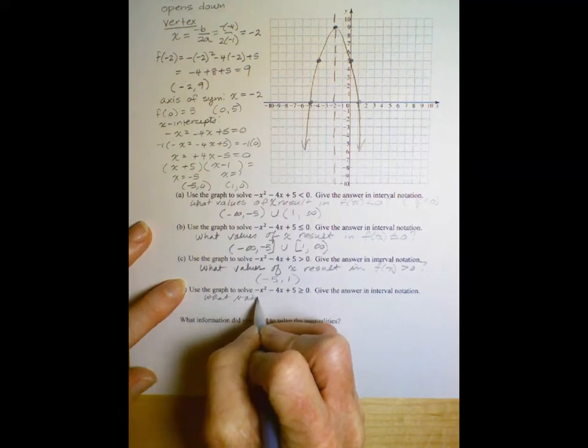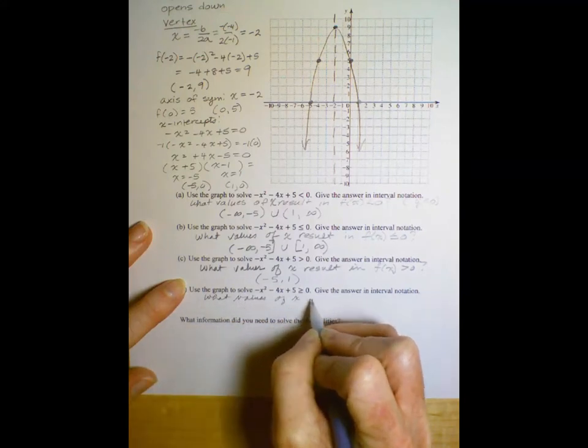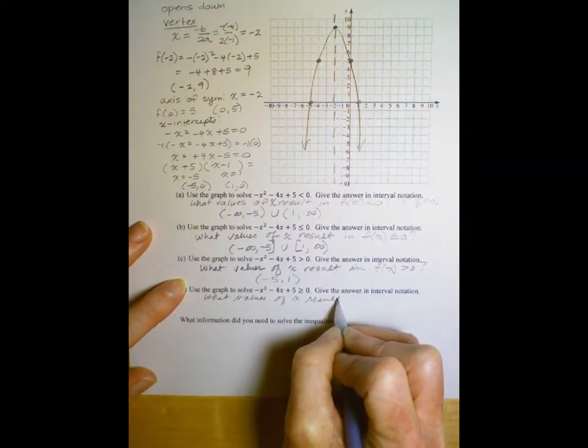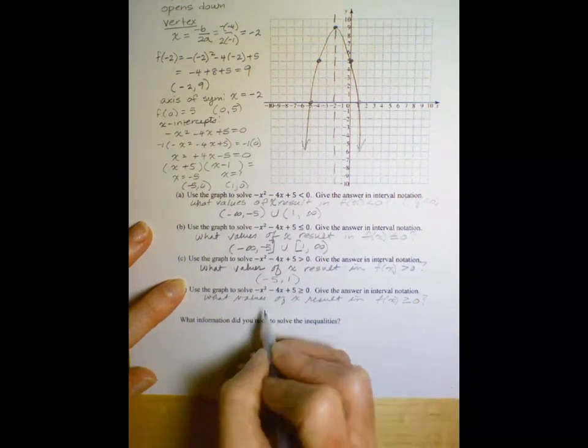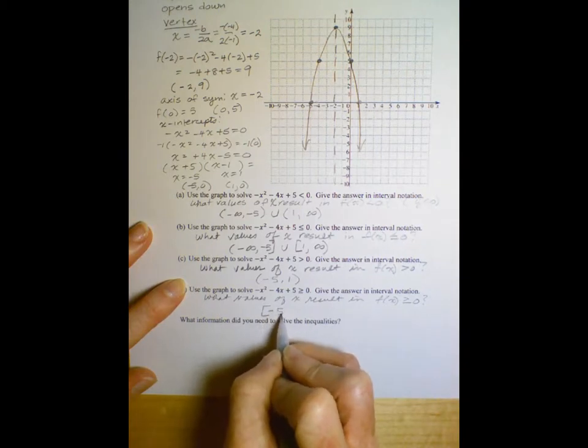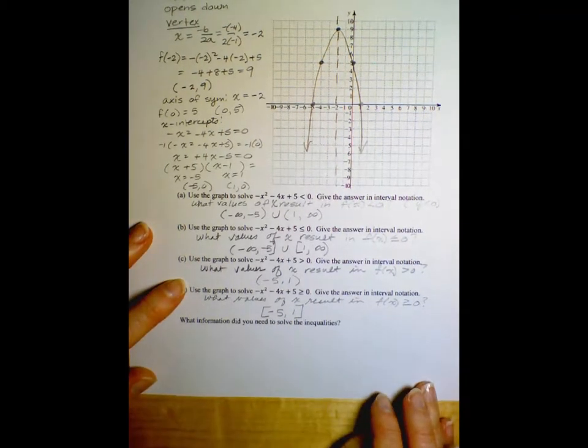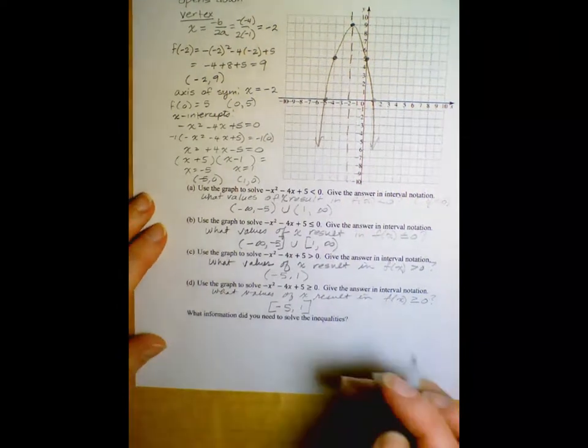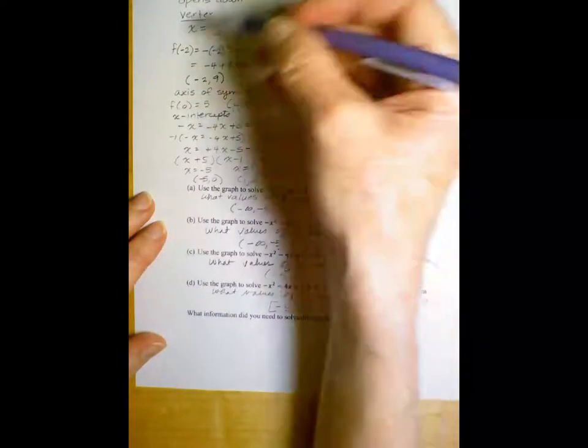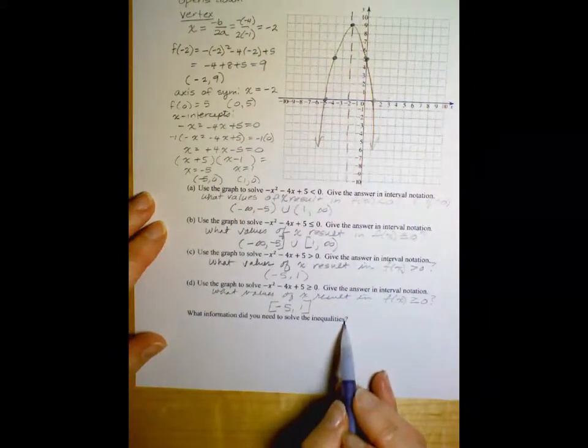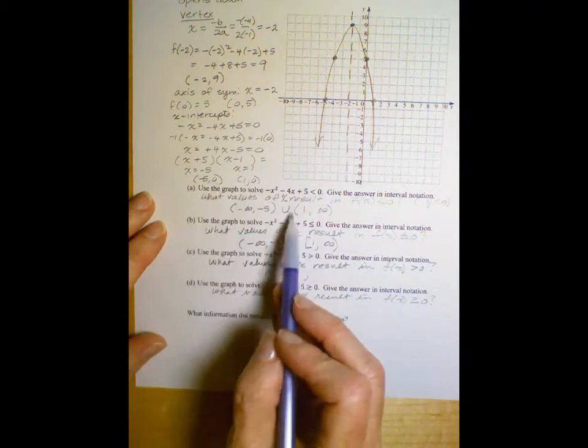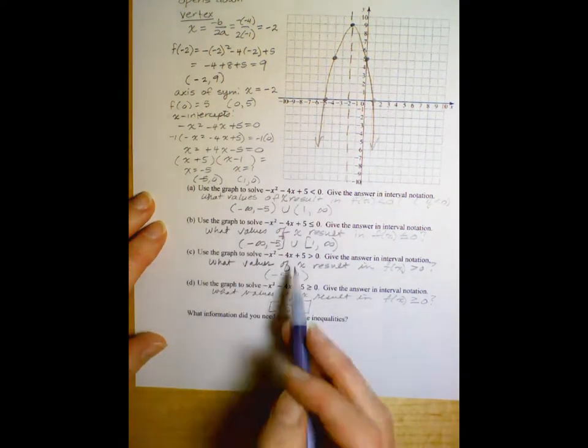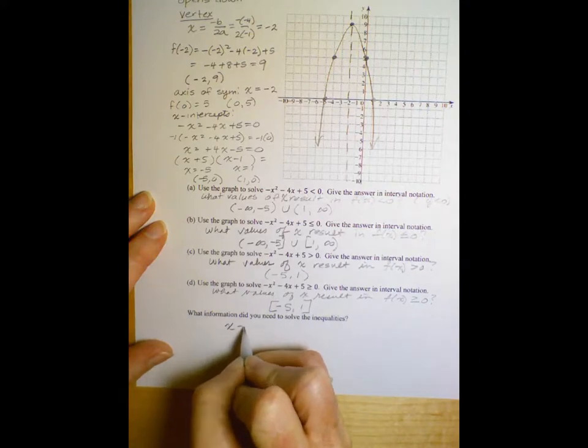And then finally, what values of x result in f of x greater than or equal to 0. So that means we just need to include the negative 5 and the 1. So what did we really need? We got all this information and we had the picture, but what did we actually use to solve the inequalities? What did we have to have?